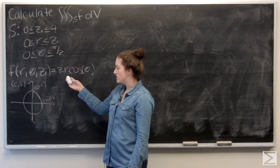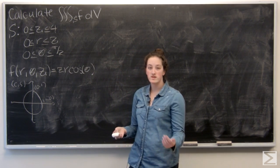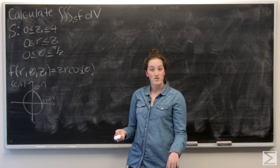Now we're given a function of r, z, and theta, and then we're given these bounds. So z is between 0 and 4, r is between 0 and z, and theta is between 0 and pi over 2.